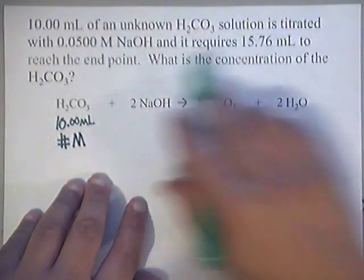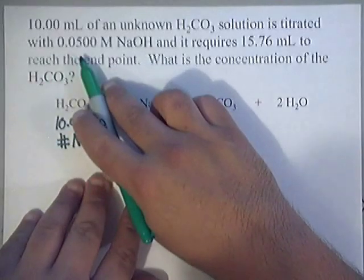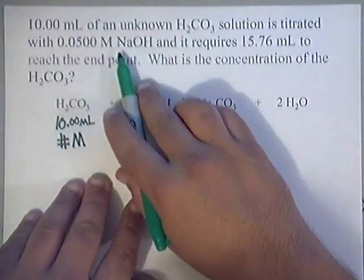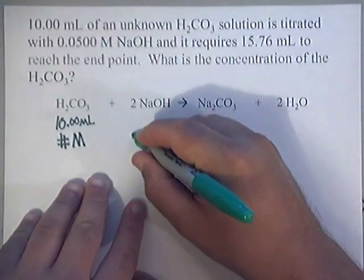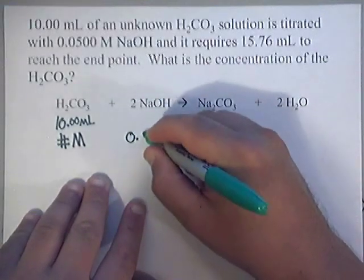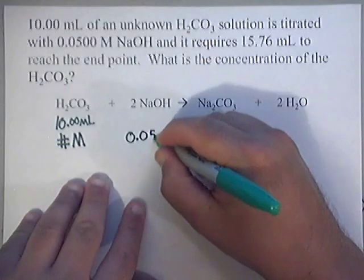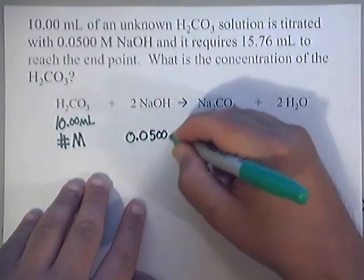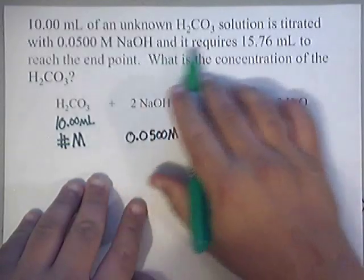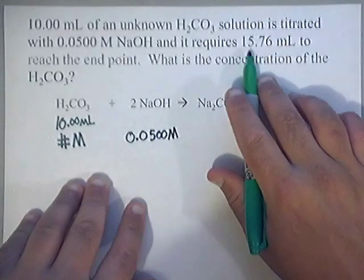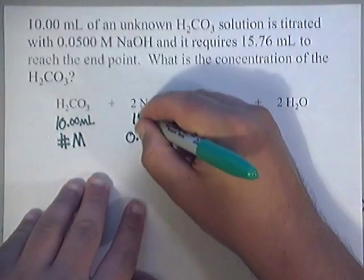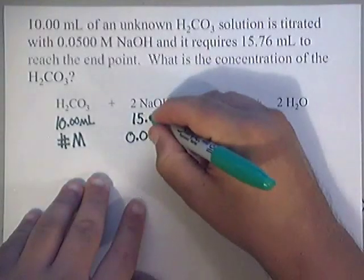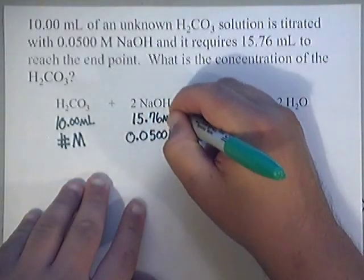Now, as I read through the question, you'll see that they tell me the concentration of the sodium hydroxide, and they tell me that it's 0.0500 molarity. And they tell me that I'm going to use 15.76 milliliters of it. So I'm going to write 15.76 milliliters right there.